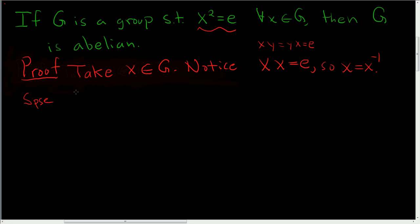So suppose x and y are elements of G, and we need to show that x times y is equal to y times x.